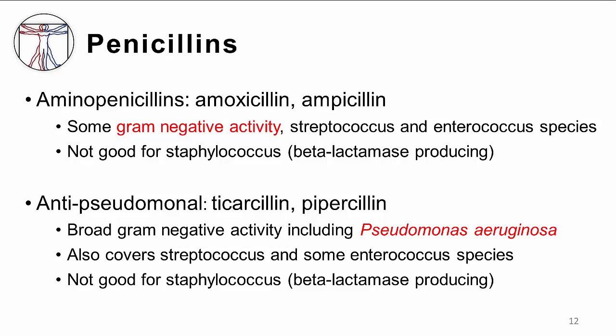None of the penicillins discussed thus far offer appreciable activity against Pseudomonas aeruginosa, a common healthcare-associated pathogen that is often resistant to multiple antibiotics. Enter the anti-pseudomonal penicillins. These agents are active against Pseudomonas and other more drug-resistant gram-negative organisms as well. However, they are just as susceptible to beta-lactamases as penicillin and ampicillin, so they do not work against staph infections. Also, strains of gram-negative bacteria that produce beta-lactamases are resistant to them as well. They do have some activity against enterococci and streptococci.